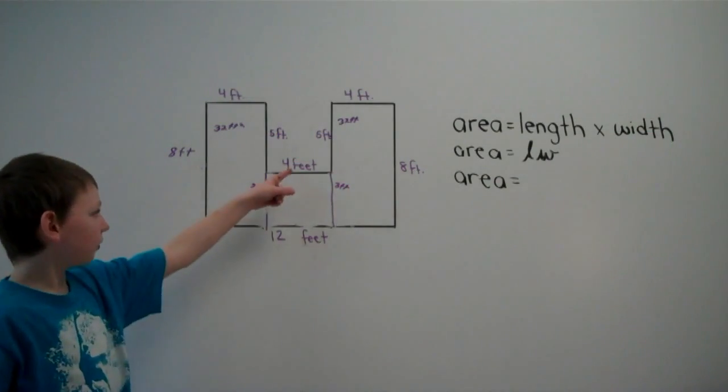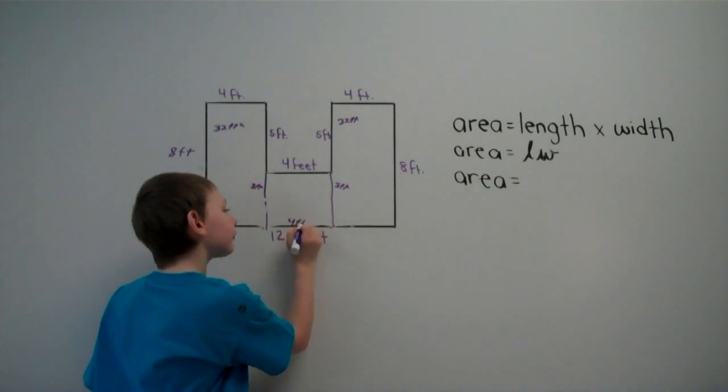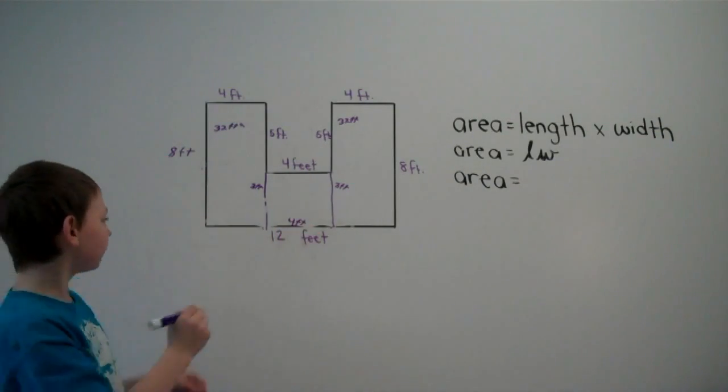And since this is 4 feet, then this has to be 4 feet. So 4 times 3 equals 12 square feet.